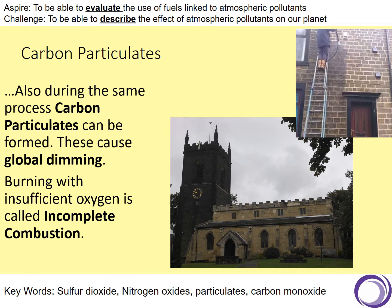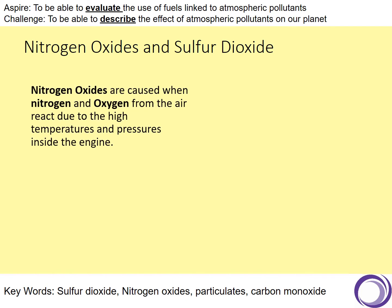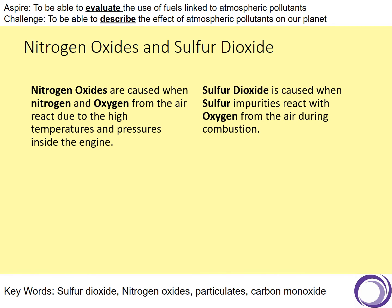Now, there are a few other pollutants that are not technically from combustion or incomplete combustion. These pollutants form in a different way, so listen carefully. These pollutants are called nitrogen oxides and sulphur dioxide. Nitrogen oxides are caused when nitrogen and oxygen from the air actually react in engines due to the high temperatures and pressures inside that engine. Sulphur dioxide is caused when sulphur impurities in the fuels react with oxygen during the combustion process.